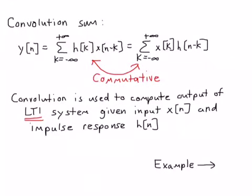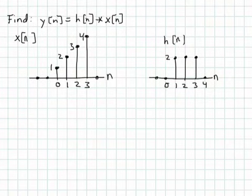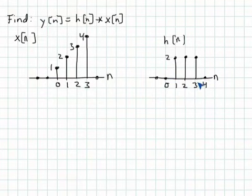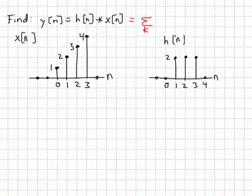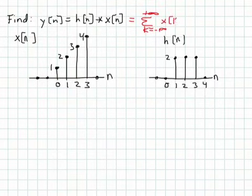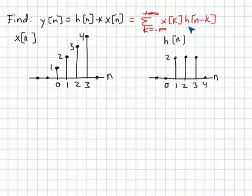So let's see an example of using convolution to determine the output of an LTI system. We want to calculate the convolution of the sequence x of n with the impulse response h of n, and these two sequences are shown here. We can write the convolution sum as the infinite sum over k, from minus infinity to plus infinity, of x of k times h of n minus k. What we're going to need for the computation is the sequence x of k and the sequence h of n minus k.